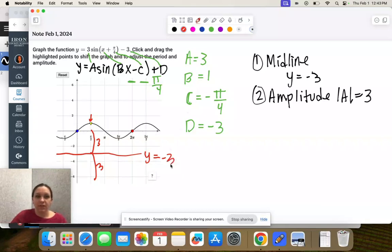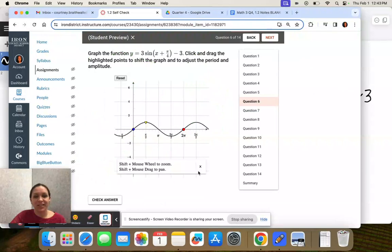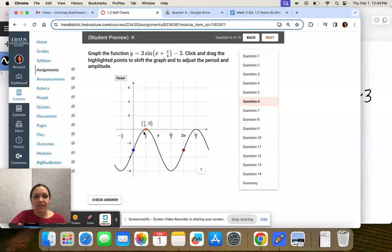So I'm going to move that box, take it down to negative 3, and then up to the axis, and then down to negative 6. So 3 above, 3 below, that's our amplitude.